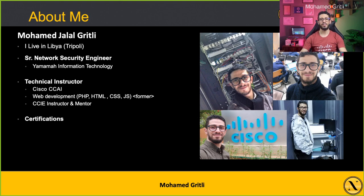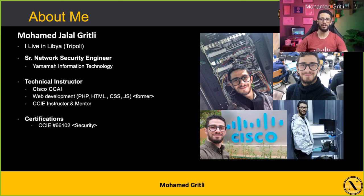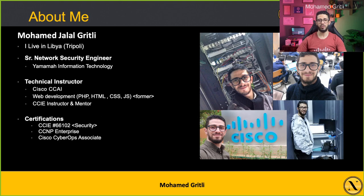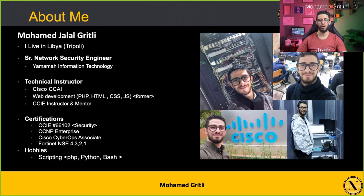The certifications I currently possess are CCIE Security — my CCIE number is 66102 — and I also have CCNP Enterprise, formerly known as Routing and Switching, and Cisco CyberOps Associate. Also Fortinet NSE4 Professional and NSE3 as a complementary. My hobbies are scripting; I love writing code in PHP, Python, and Bash, and I love reading about information technology on a daily basis.